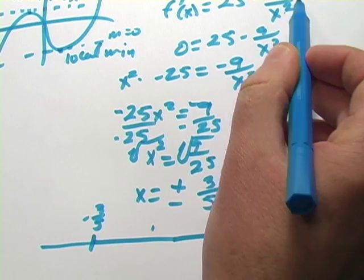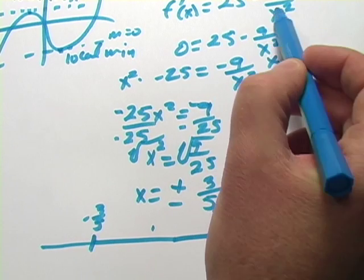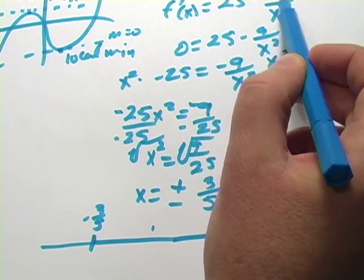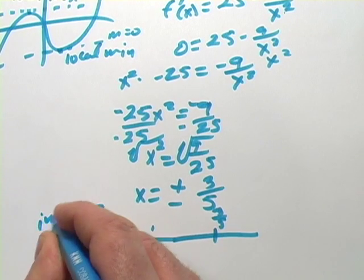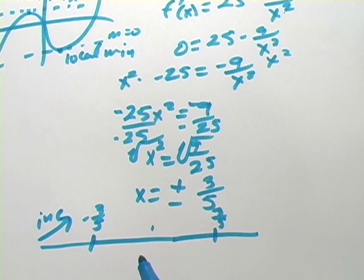We'll put negative 1 in here. I get 1 on the bottom, negative 9, 25 minus 9. That's a positive number. So this is going to be increasing. Looks like this is going to be a local max. I'll come back to the middle.